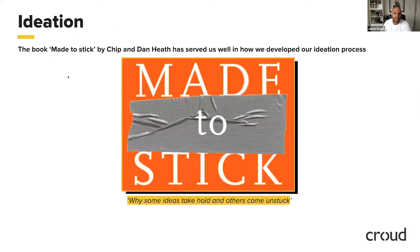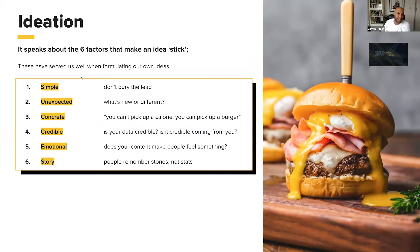When we start our ideation, there's a book I should mention — by Chip and Dan Heath called Made to Stick, which is literally about why some ideas take hold and others come unstuck. It's something we use as a basis for our ideation. It talks about six key factors that make an idea stick, which we've used as a basis for coming up with ideas.